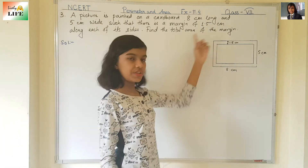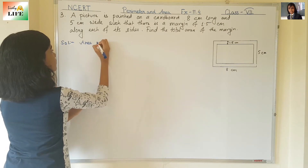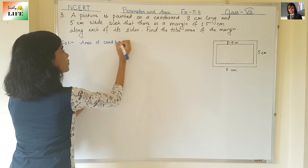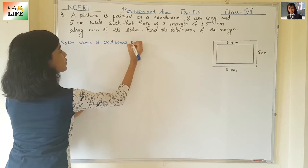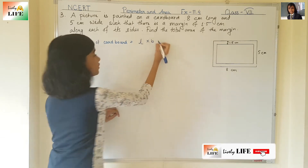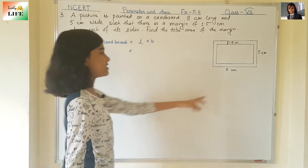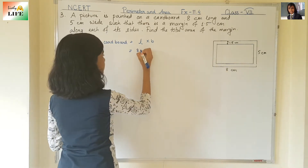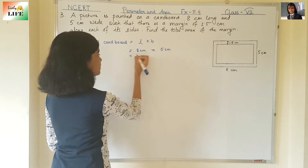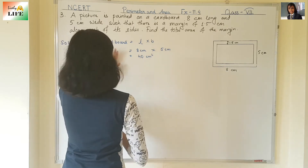First let's find out the area of the cardboard. Area of cardboard — it is a rectangle, so the formula is L into B, length into breadth. The length is 8 cm and the breadth is 5 cm. 8 times 5 = 40 cm². This is the area of the cardboard.